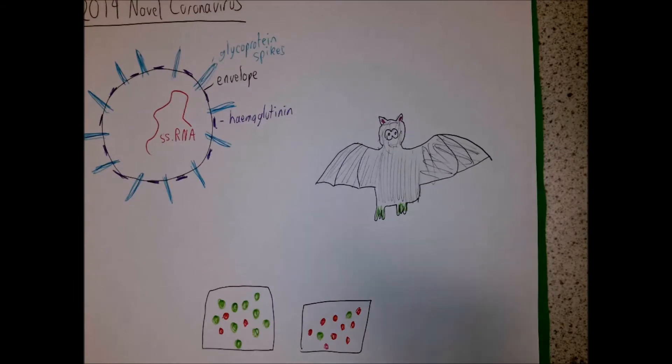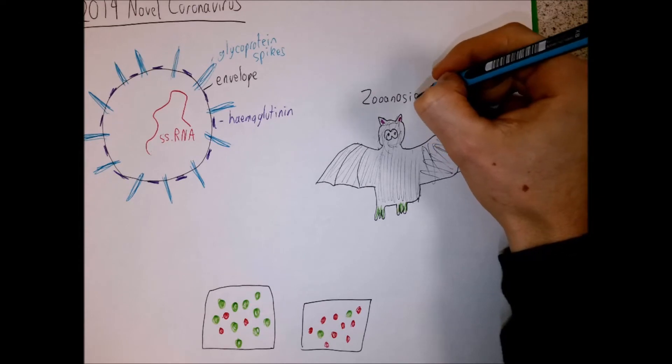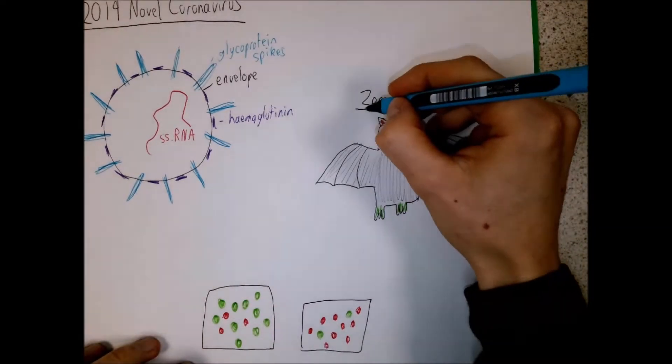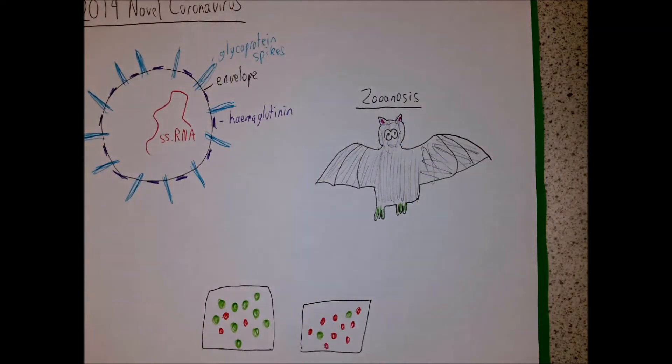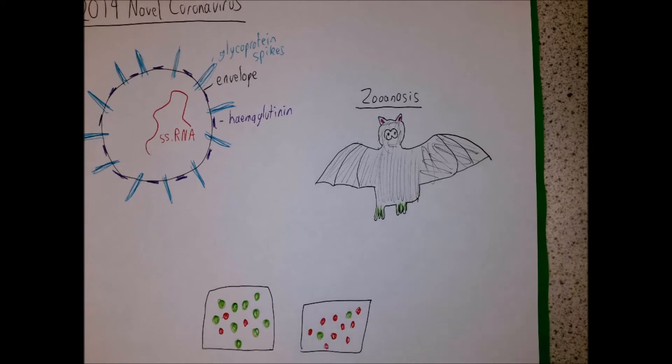So what this is an example of with the coronavirus is something called zoonosis. So zoonosis is where it's come from an animal in the wild rather than coming from humans originally. In this case, the most likely source of it is going to be bats in that region of China. There was a theory earlier on about snakes, but now bats look like the most likely source of the virus.